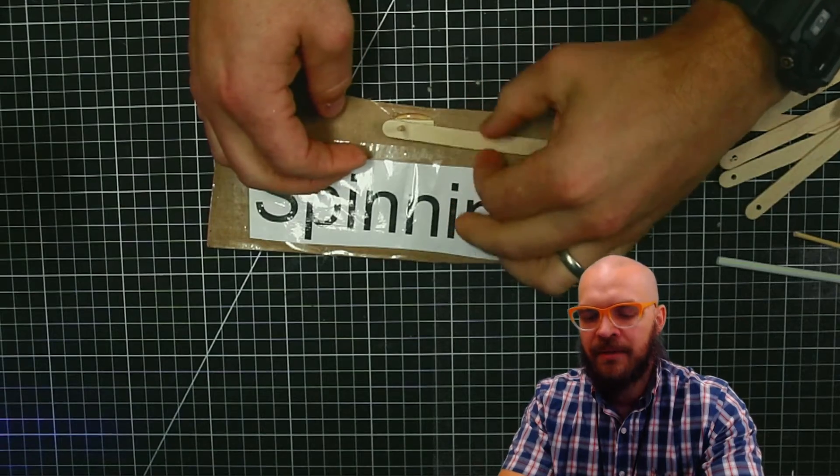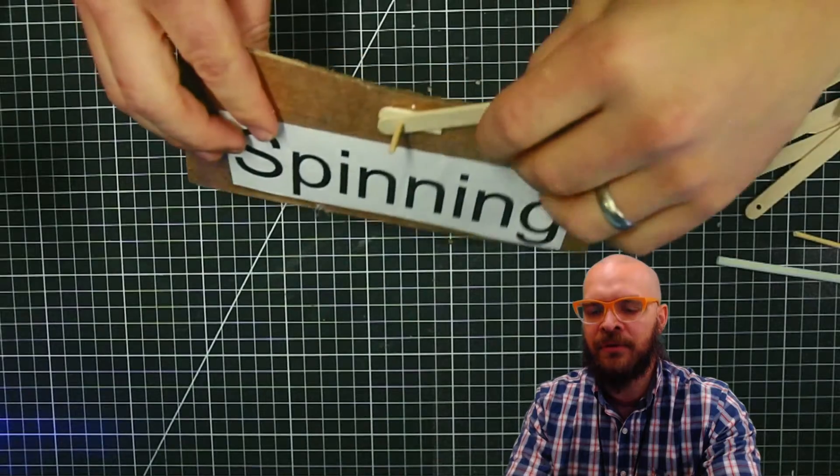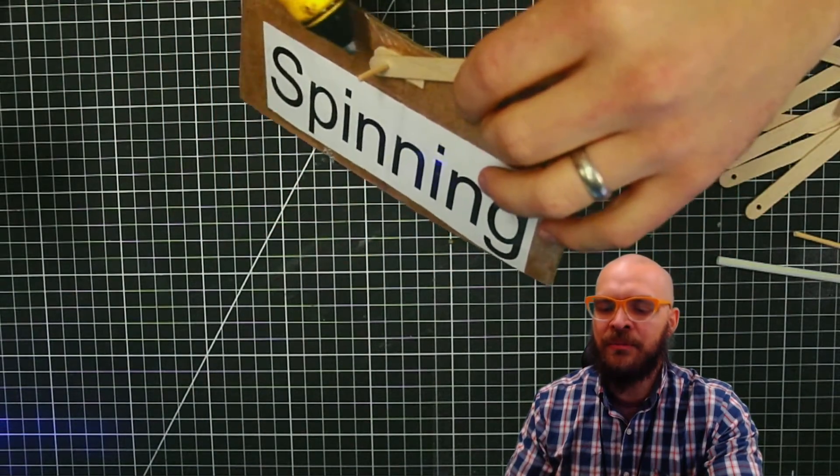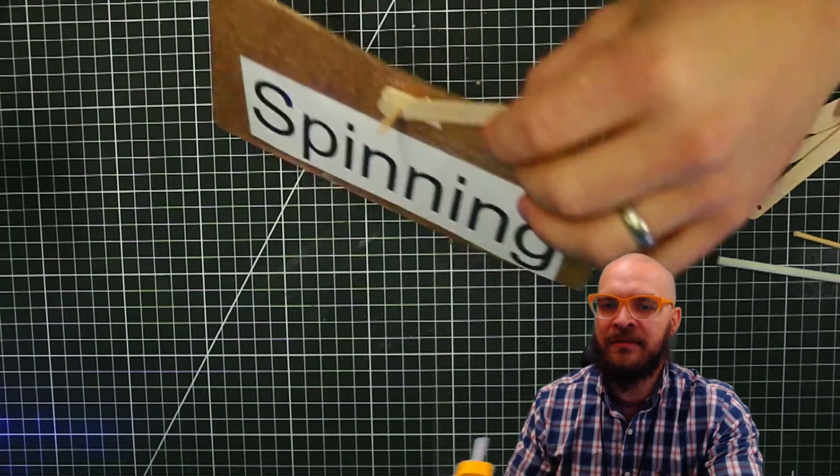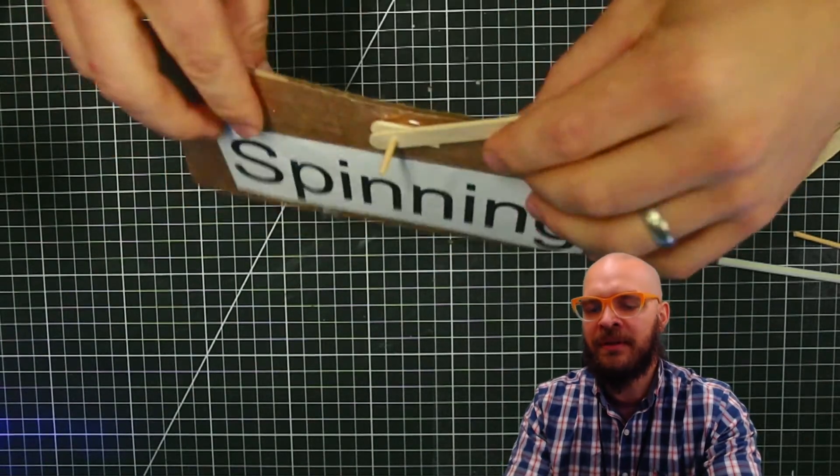Now the last step is to keep it from falling off. Obviously it can just slide right back off the skewer. In the past, I've seen people try to use hot glue, but a lot of students will end up gluing this post to the thing that's supposed to spin.